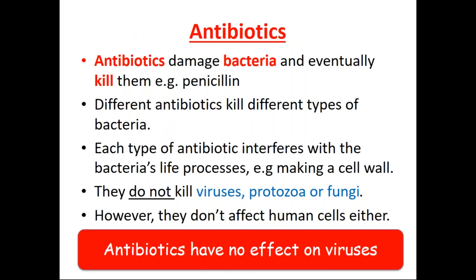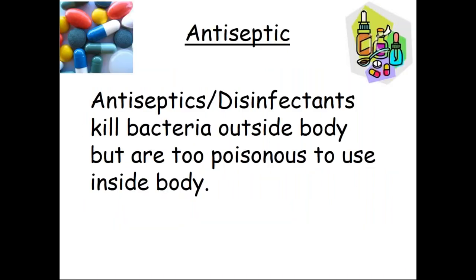Besides white blood cells, if you are already infected, we can protect cells and heal by using antibiotics. Antibiotics damage bacteria and eventually kill them — for example, penicillin. Different antibiotics kill different types of bacteria, and each type interferes with the bacteria's life processes, for example making a cell wall. They do not kill viruses — this is important to know. They also do not affect human cells. When you have a disease caused by viruses, you cannot use antibiotics to heal yourself. We can also protect ourselves using external methods such as antiseptics or disinfectants, which kill bacteria outside the body but are too poisonous to be used inside the body.